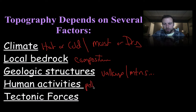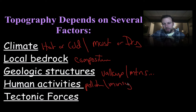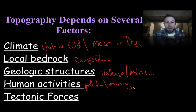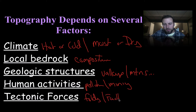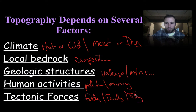Human activities such as pollution, mining, and other human activity can affect the topography. There are any number of factors that humans can do to affect it. And then of course tectonic forces — folding, faulting, or tilting rock layers — will also affect our topography.